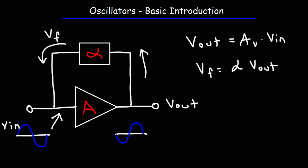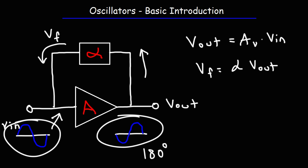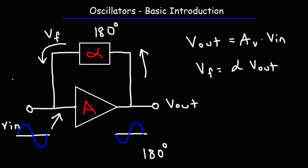In order for the circuit to work, the feedback network must provide a signal that is in phase with the input signal. The amplifier provides a 180-degree phase shift relative to the input signal — you can see that these two waves are 180 degrees apart. The feedback network also provides another phase shift of 180 degrees, so it ends up in phase with the original input signal, and this leads to sustained oscillations.